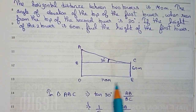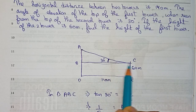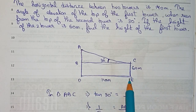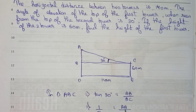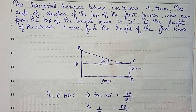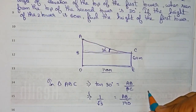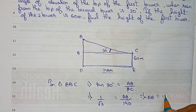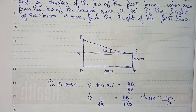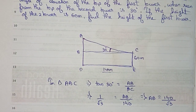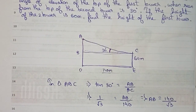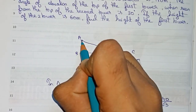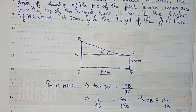If we look at this diagram carefully, the BC value is equal to DE — they are parallel to each other. So BC and DE values will be equal. In place of BC we can write 140 meters. So tan 30 equals 1 by root 3, which gives AB equal to 140 by root 3. Keep this answer for now.